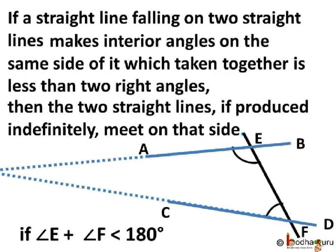if a straight line falling on two straight lines makes interior angles on the same side of it, which taken together is less than two right angles, then the two straight lines, if produced indefinitely, meet on that side.